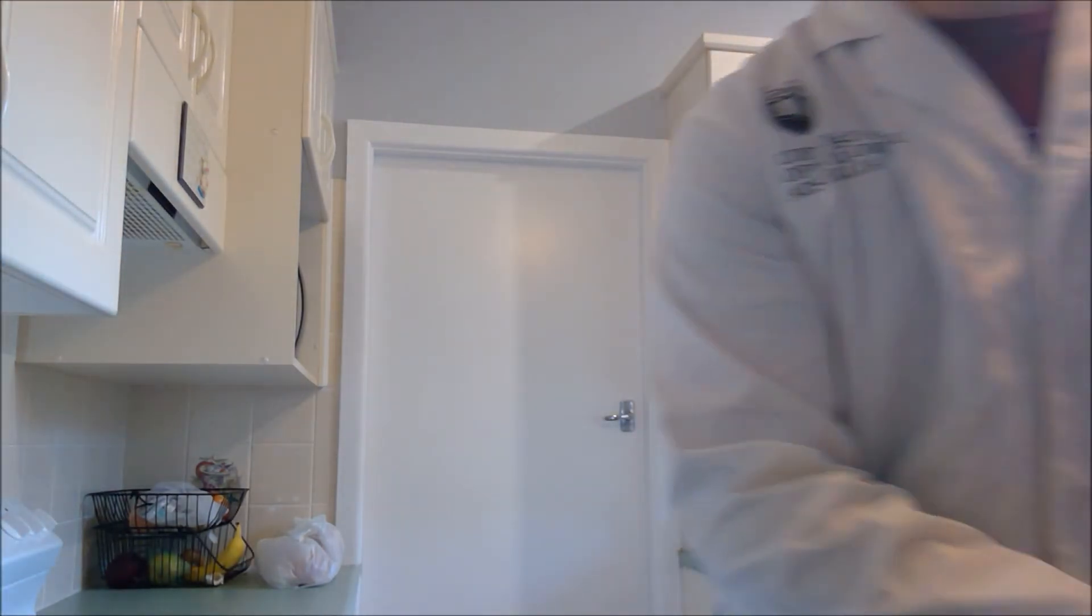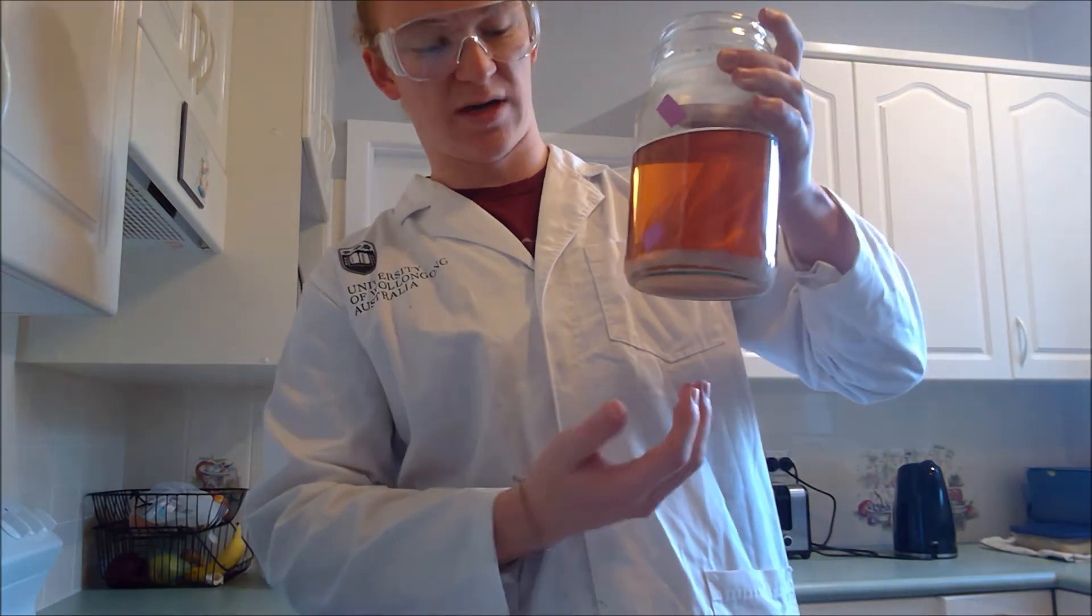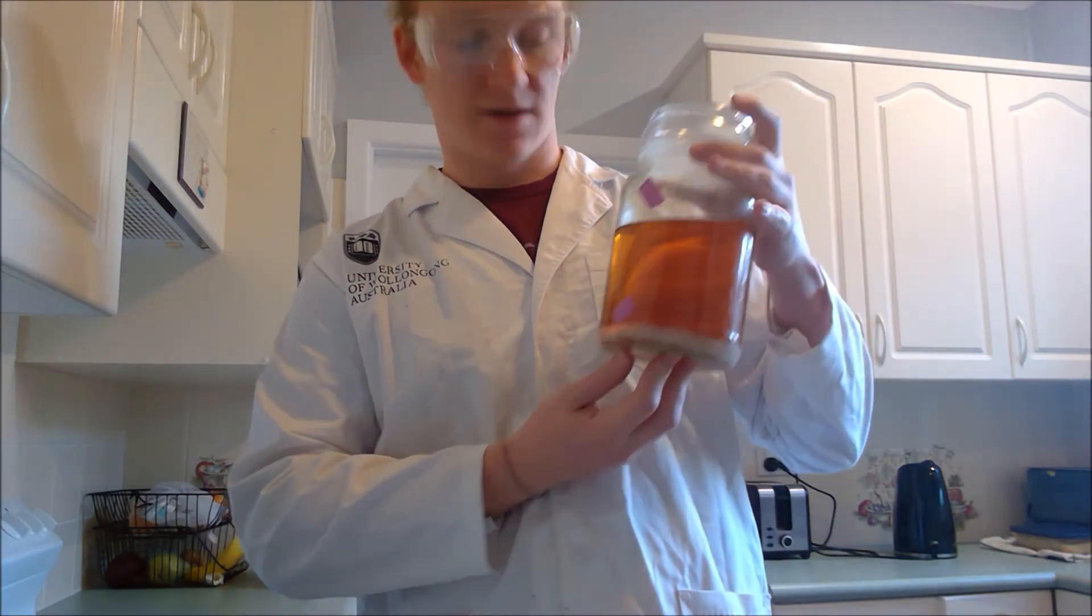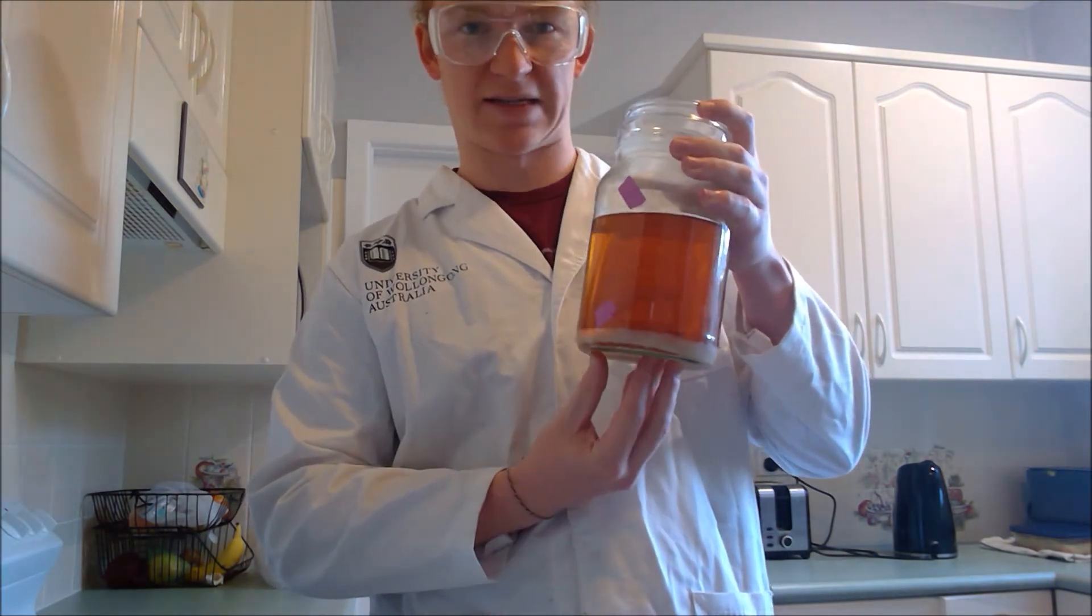Okay, so now that we know how much bicarb soda we're going to need to fully react with the acetic acid within the vinegar, we can go ahead and weigh those reagents and then put them into the pot so they can react together. Also, I will stress this: it's very important to make sure you don't put too much bicarb in, because this is the result. We don't get a nice solution of sodium acetate; we get a clump of basically bicarb soda at the bottom there. So we want to make sure we use roughly the same amount.